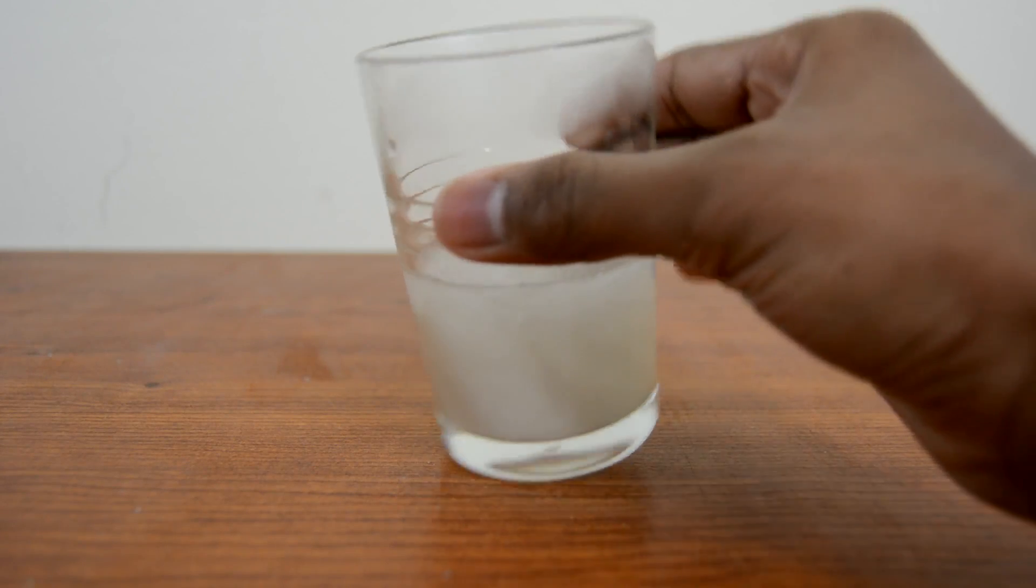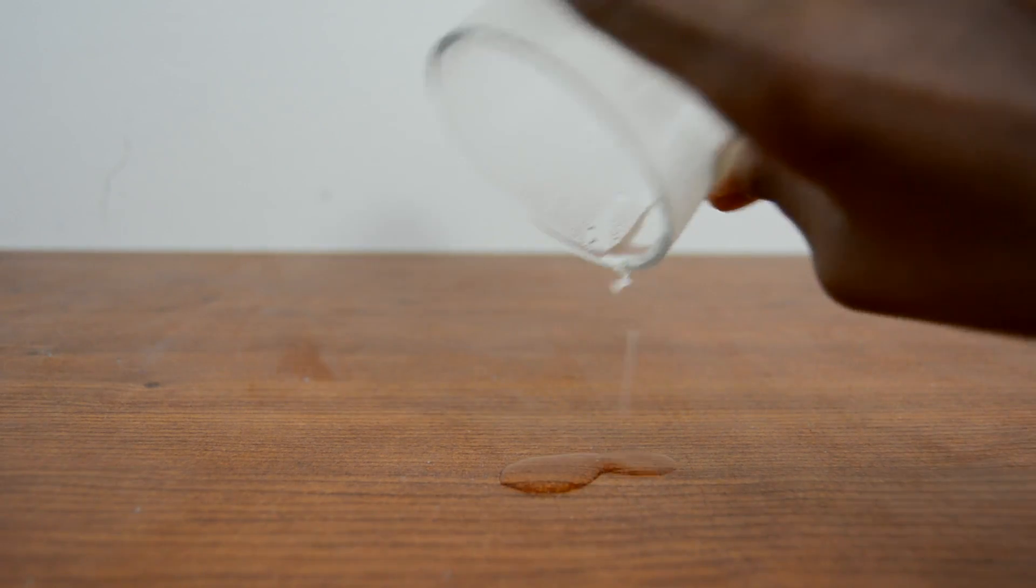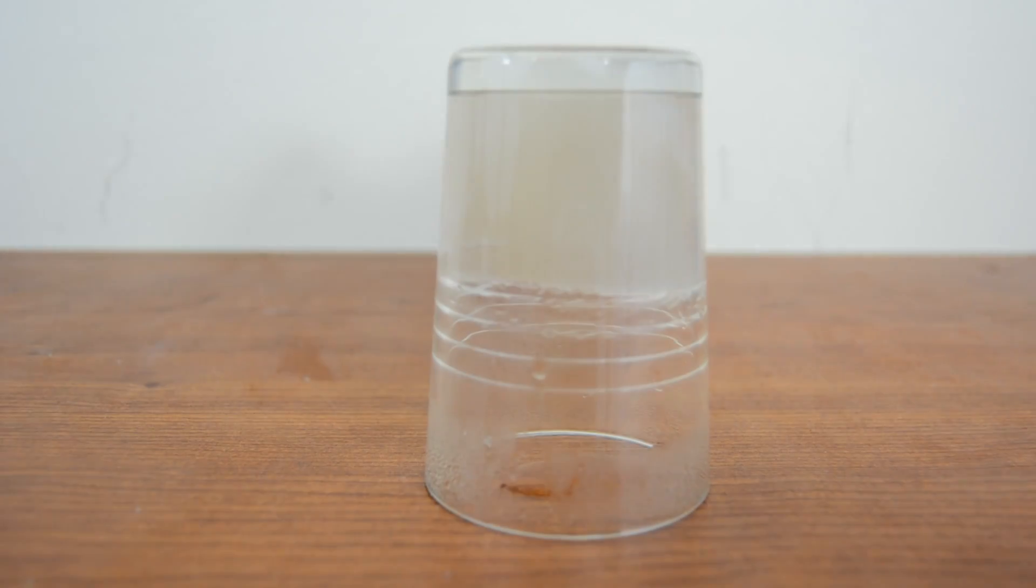So as you can see, it's pretty much a solid now. If you turn it upside down, only a few droplets of water fall out, but other than that it's pretty much a solid piece of hot ice.